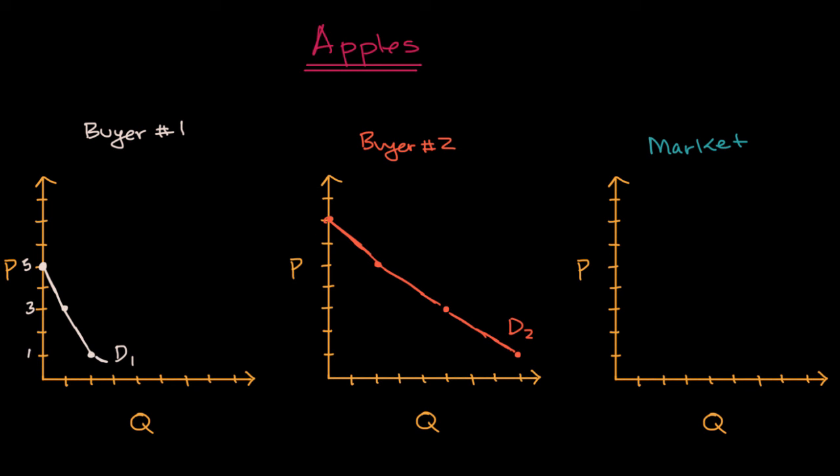We can similarly look at the demand curve for buyer two, and sometimes you'll see this in table form where it's called a demand schedule. But you can see at one, two, three, four, five, six, seven, at seven dollars, buyer two is not interested in apples. At five dollars a pound, they are interested in buying two pounds of apples per week.